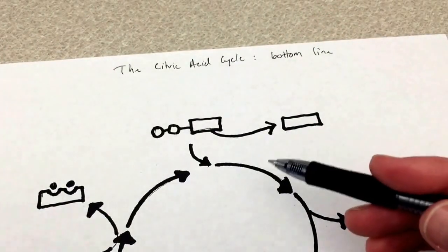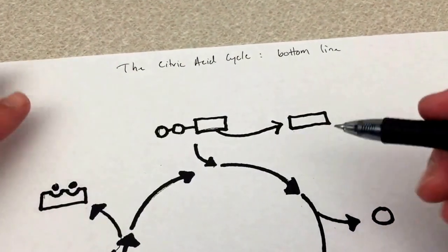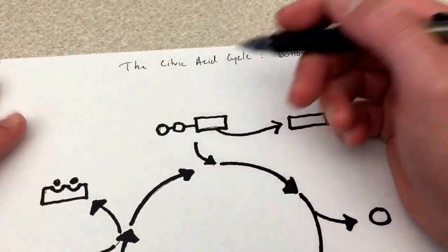Just like we did with glycolysis, this summarizes the most important points of what occurs during the citric acid cycle.